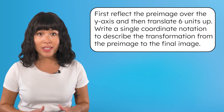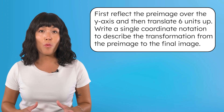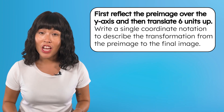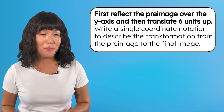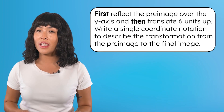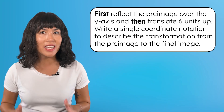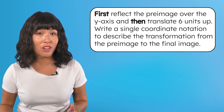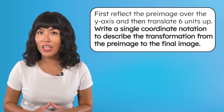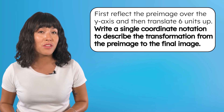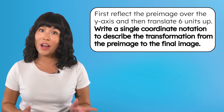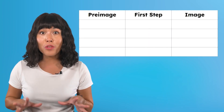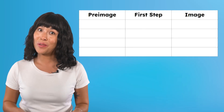Here's an example of a sequence of transformations. We want to first reflect the pre-image over the y-axis and then translate six units up. Notice that we use words like 'first' and 'then' because in a sequence, we perform transformations in a specific order. We also need to write a single coordinate notation to describe the transformation from the pre-image to the final image.